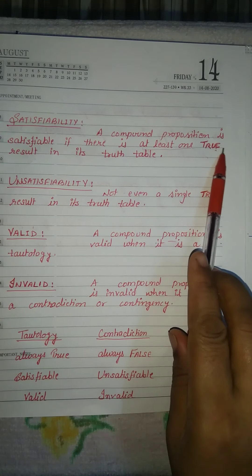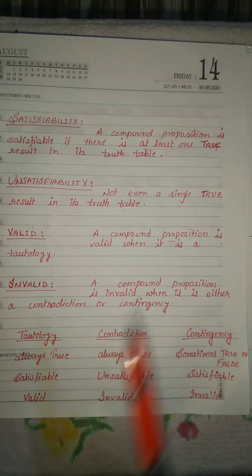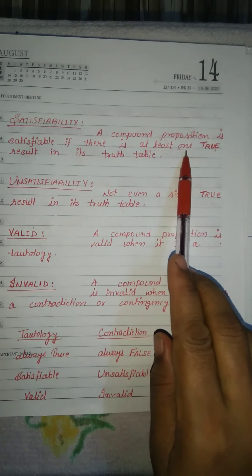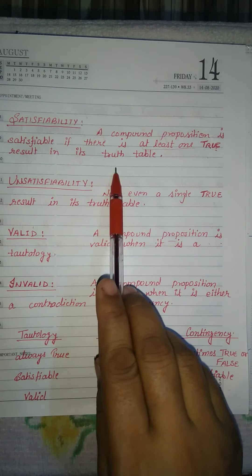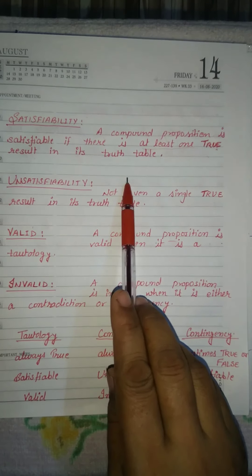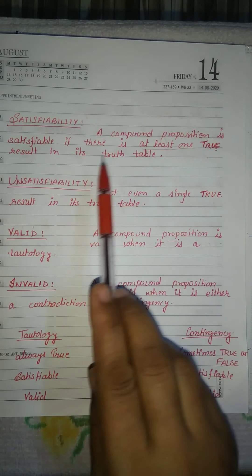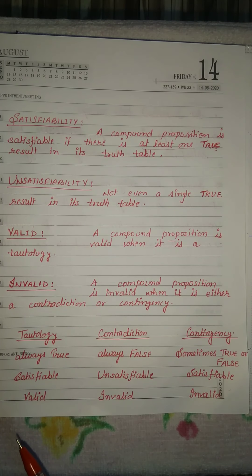A compound proposition is satisfiable if there is at least one true result in its truth table. At least one true result in its truth table. So we can say that it is satisfiability.